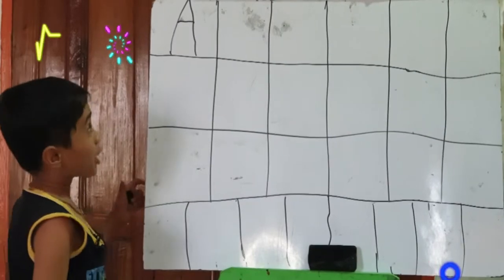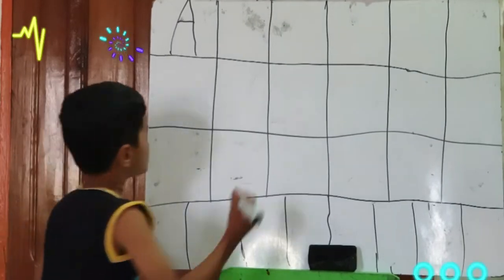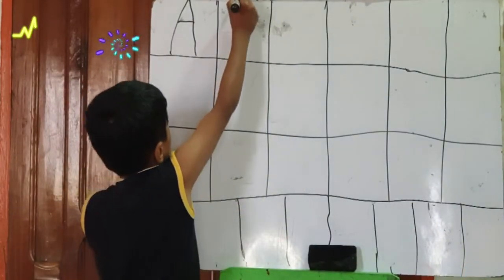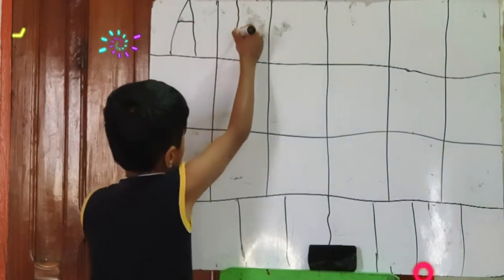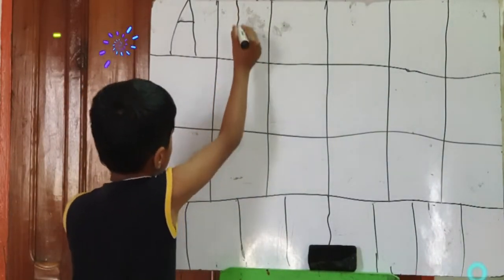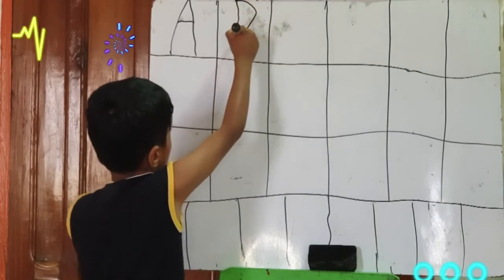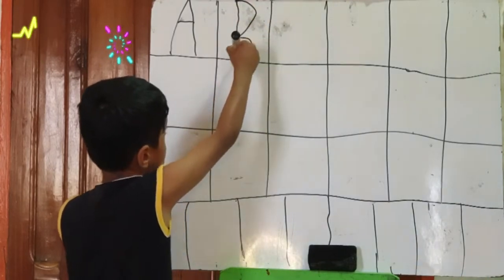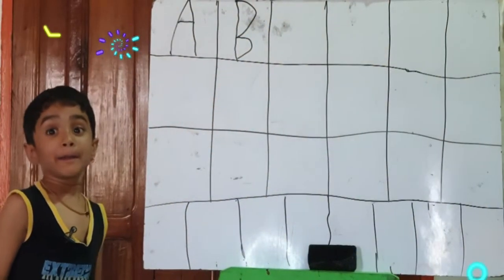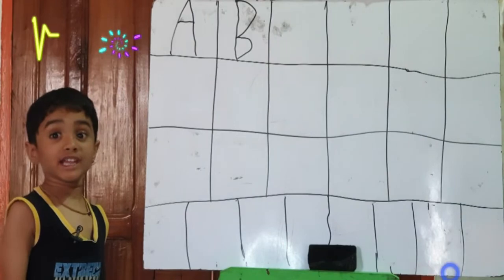Now B. One standing line, one curve, one curve. That makes B.